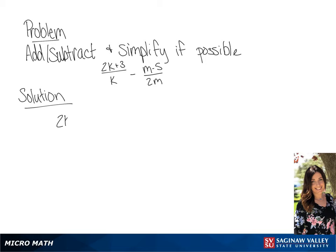Our problem is 2k plus 3 over k minus m minus 5 all over 2m. We're going to get a common denominator of 2km.